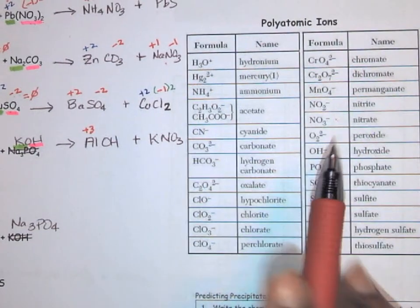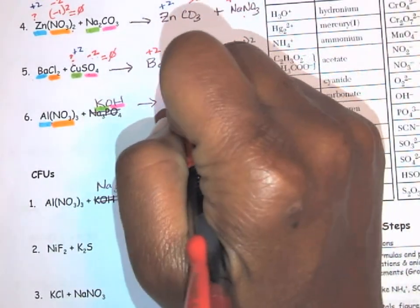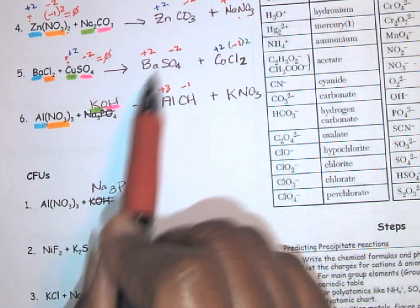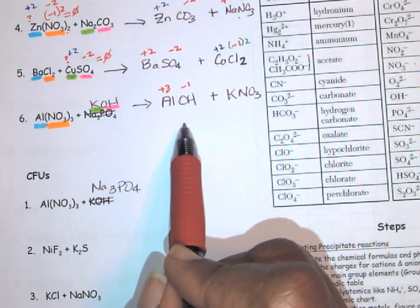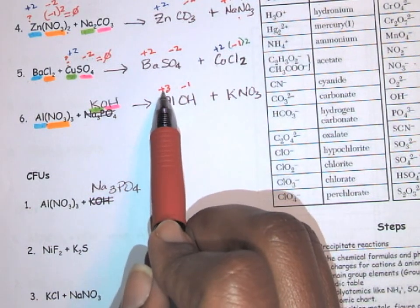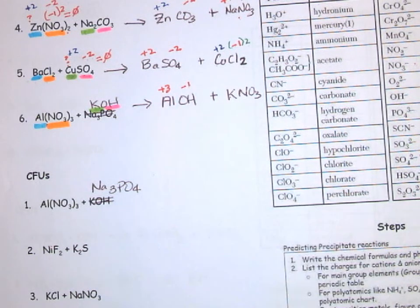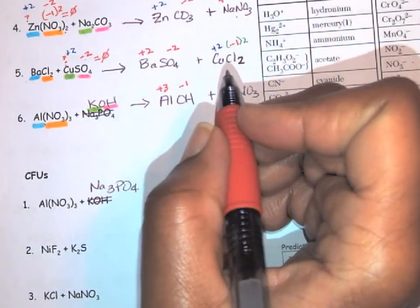All right, so is this the correct formula? No, it's not, right? Because this has a plus three charge, that has a minus one charge. If you add those two charges together they do not equal zero, so I have to correct this formula.